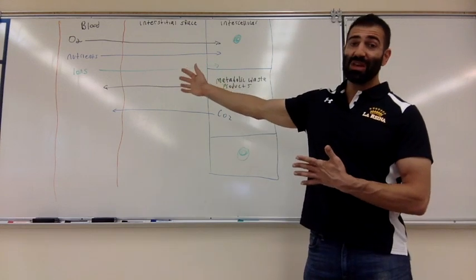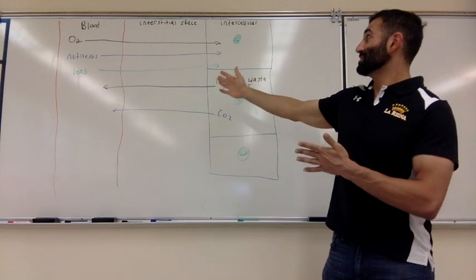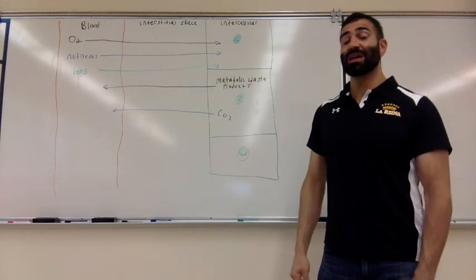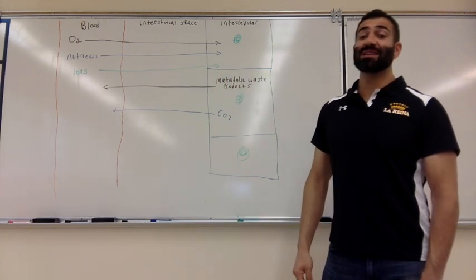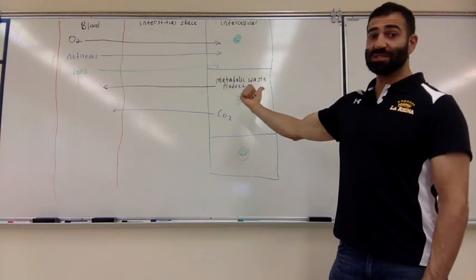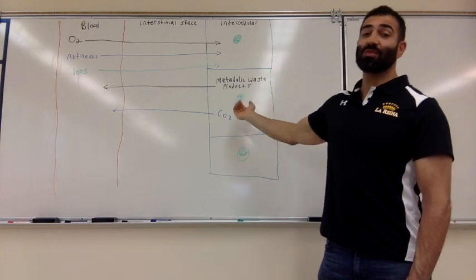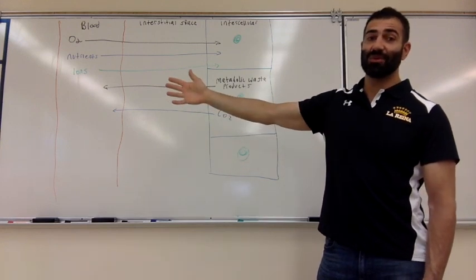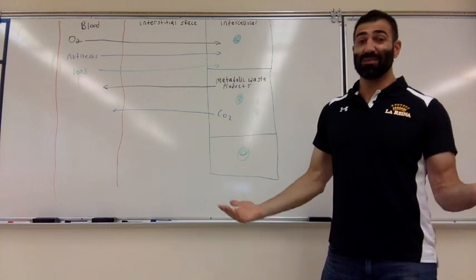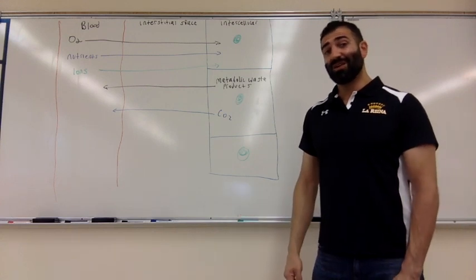So that is our recap. We have three environments in the body: blood, the interstitial space, and the intracellular environment. The idea is that blood gives nutrients and essentials to our cells, and then our cells take their waste products and put them into our blood, which is then expelled from the body in one form or another.